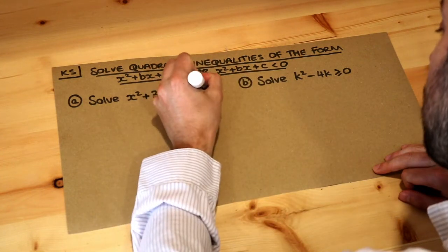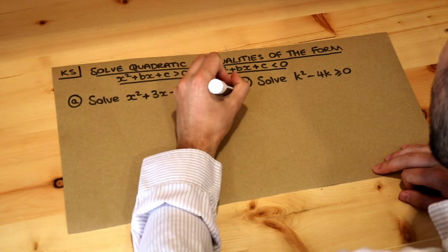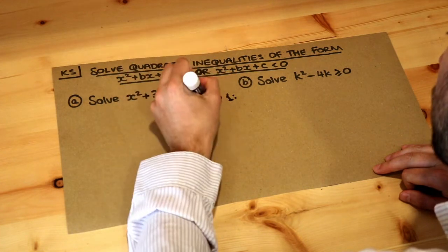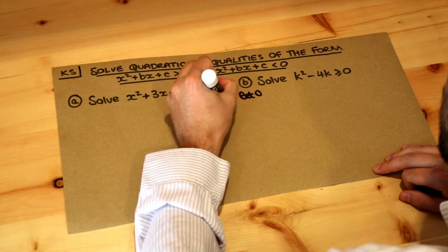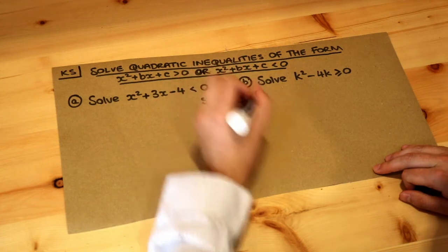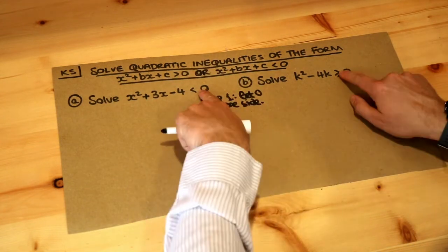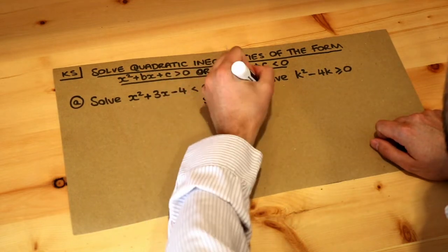So step one in both cases is going to be to get zero on one side. Now that's already done in both cases. In the next video we'll look at cases where you don't have zero on one side, but I've already got zero on one side so that's okay.